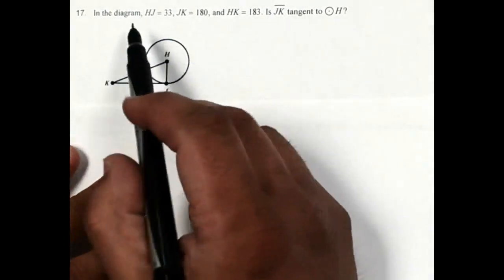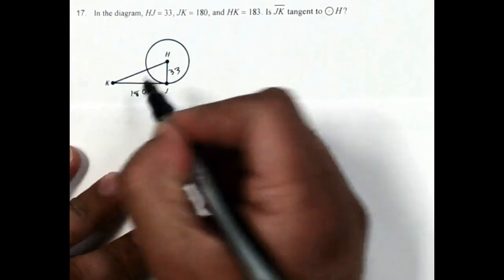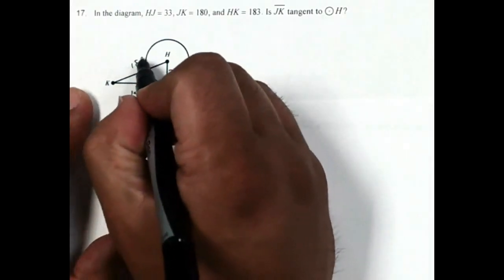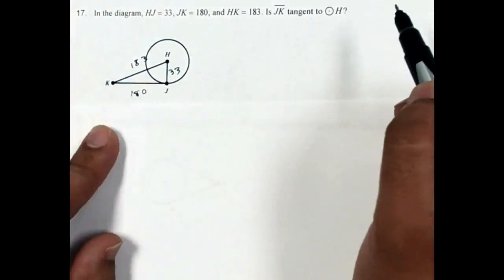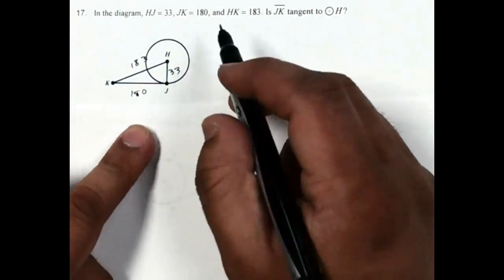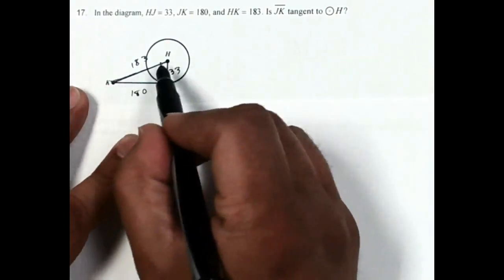All right, number 17 says in the diagram, HJ is 33, JK is 180, and HK is 183. It's asking, is segment JK tangent to circle H? This problem is very similar to number 16, except they went ahead and gave me the entire length of HK, so I don't have to add anything else to it.